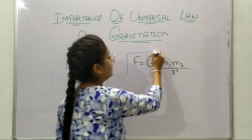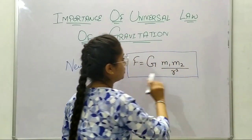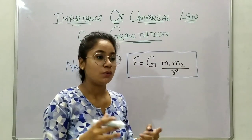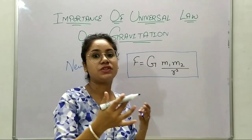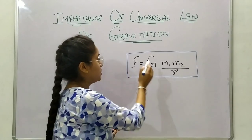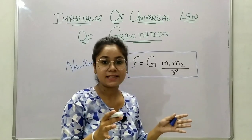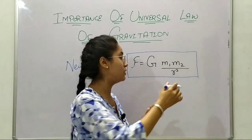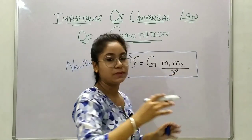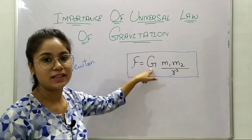Newton gave us this formula in which M1 and M2 are the masses of two objects which apply a force of gravitation — they try to attract each other under the influence of the gravitational force. These two bodies have a distance R from the centers of the bodies.